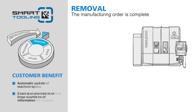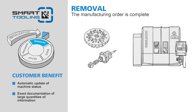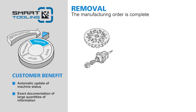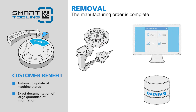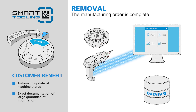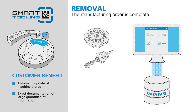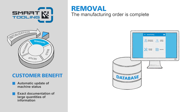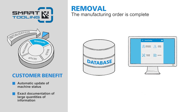Removal. The manufacturing order is complete. Have you manufactured all of the components, or have the blades reached their end of life? The cutter head and the fixture are removed from the machine. With a simple scan, you can confirm the production equipment is available for new tasks using the Smart Tooling app. Benefit from exact documentation of large quantities of information and use this as the basis for optimizing your manufacturing process.